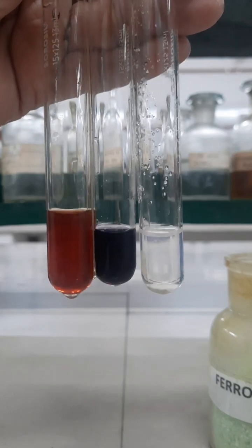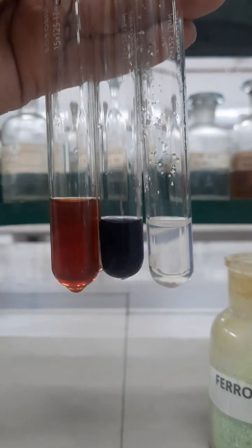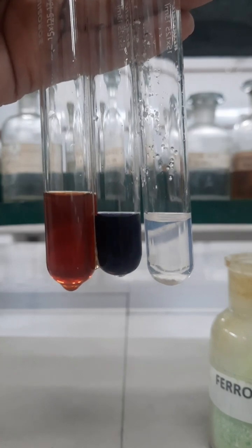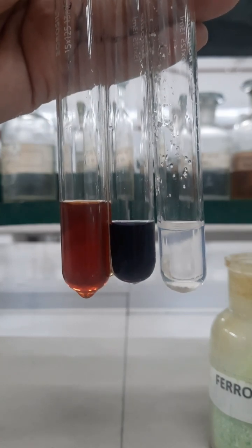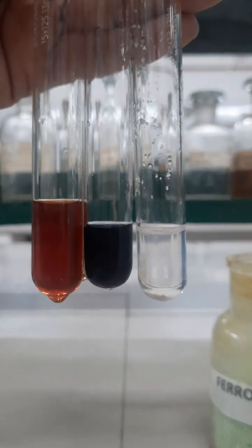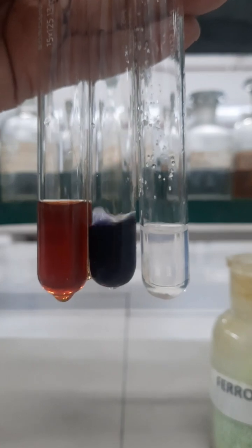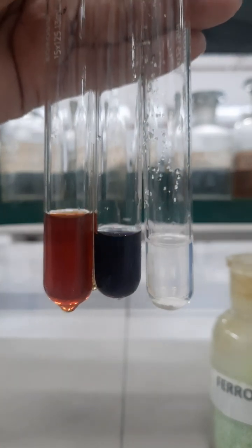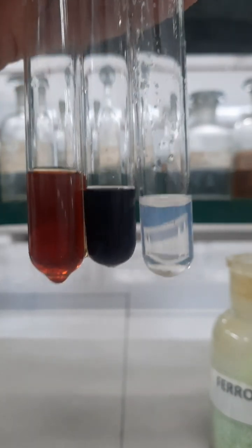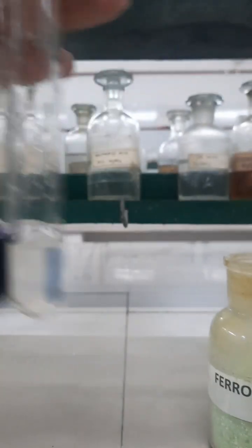Now I am diluting the mixture with distilled water such that the color will be observed properly. Add some more distilled water into the second test tube. Here you can see the appearance of violet color.